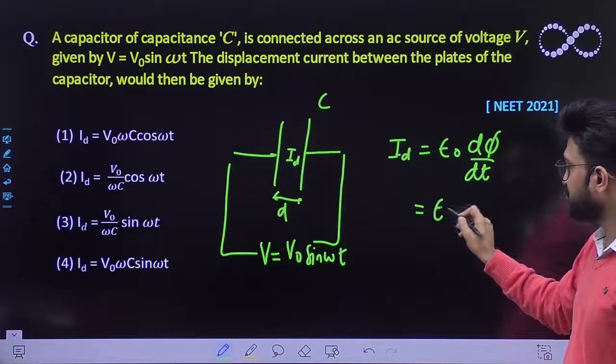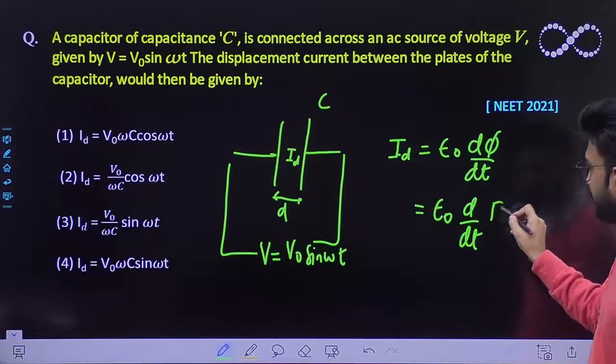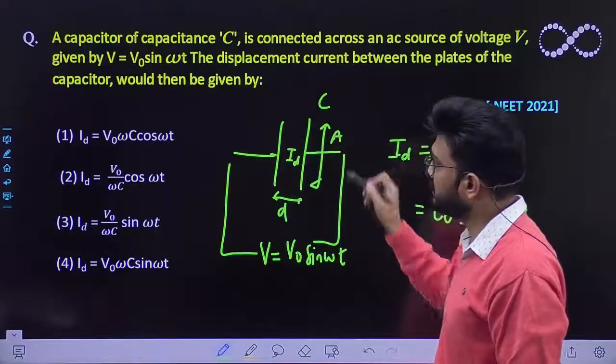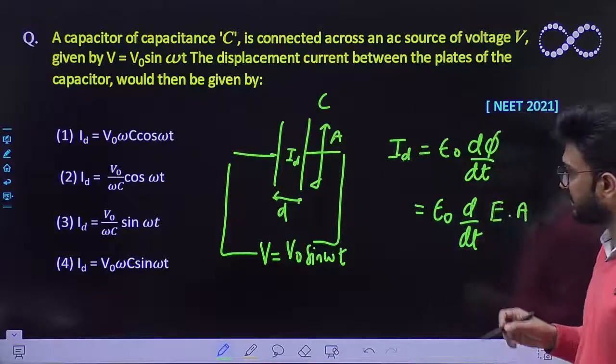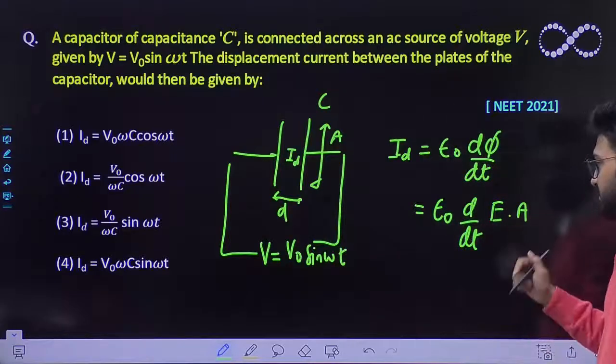And flux is also given by relationship, it must be equal to E·A where A is the area of this plate. Let A be the area and let D be the distance between the plates.